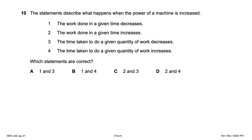The statement describes what happens when the power of a machine is increased. Power = work done / time. Power is directly proportional to work done and inversely proportional to time. So: work done in a given time increases — correct; time taken to do a given quantity of work decreases — also correct. Two and three are right answers, option C.